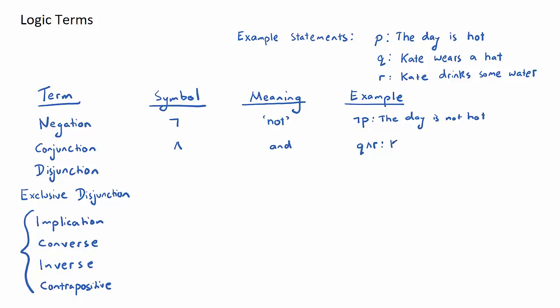Next one, disjunction, has the opposite symbol of conjunction. So it's like a v. That means or. And an example would be if I had q disjunction r. It would probably be, I expect it would be, and you could probably guess this, Kate wears a hat or drinks some water.